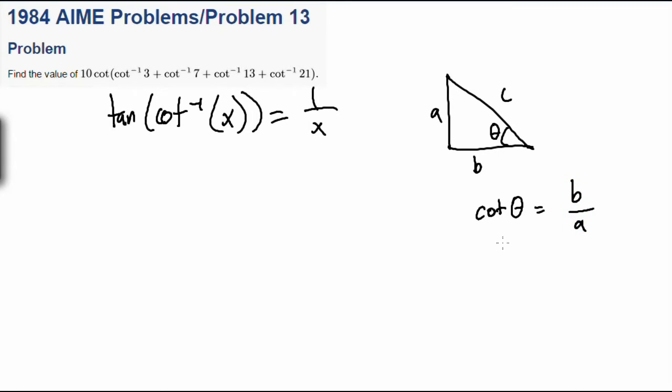Let's say that cotangent theta is equal to B over A, because that's what cotangent is. Which means that cotangent inverse of B over A is just theta.